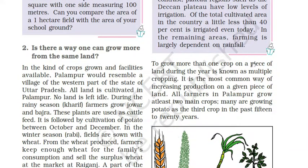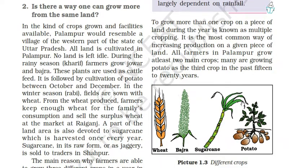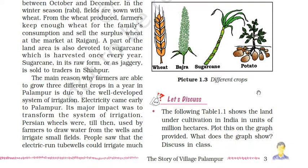To grow more than one crop on a piece of land during the year is known as multiple cropping. It is the most common way of increasing production on a given piece of land. All farmers in Palampur grow at least two main crops. Many have been growing potato as a third crop in the past 15 to 20 years. Different crops grown include wheat, bajra, sugarcane, and potato.